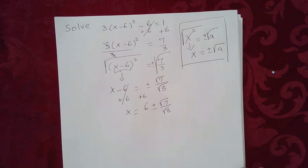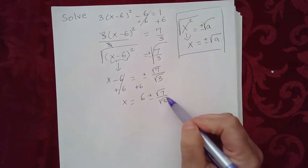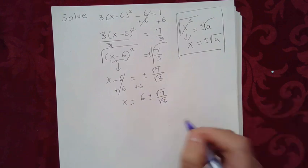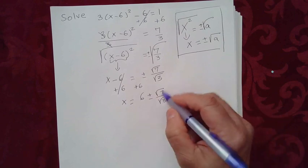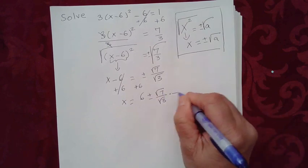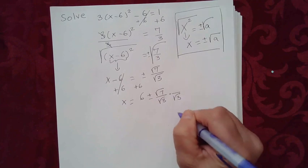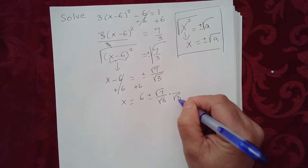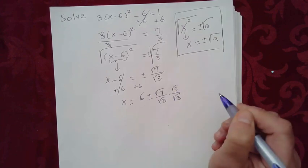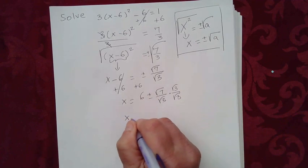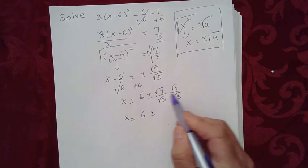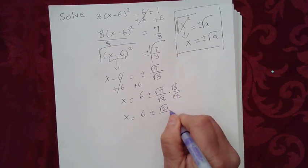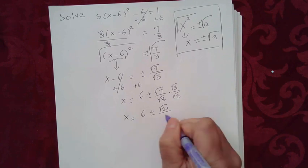Technically this is a correct answer. However, we don't usually leave the square root in the denominator, so let's go ahead and rationalize the denominator. We need to multiply by square root of 3, because square root of 3 times square root of 3 gives me 3. Whatever I multiply in the denominator, I have to multiply in the numerator. We'd be left with x equals 6 plus or minus square root of 7 times square root of 3 — that's square root of 21 — over square root of 3 times square root of 3, which is 3.